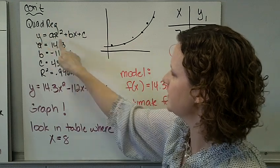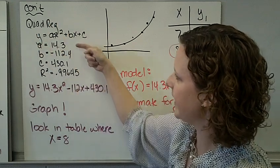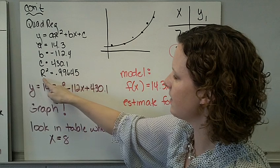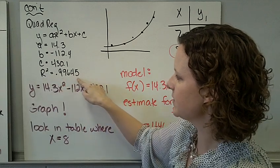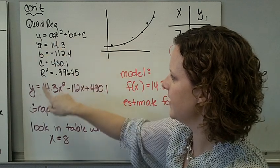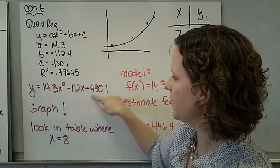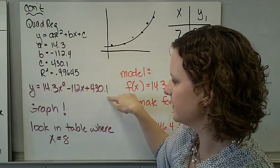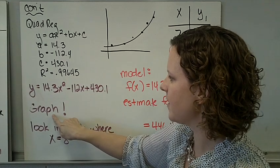Right there. So you have quadratic regression, standard form, A, B, C, and your R squared value. This is close to 1, so we're good. Take this information, plug it in, and we have our quadratic equation.